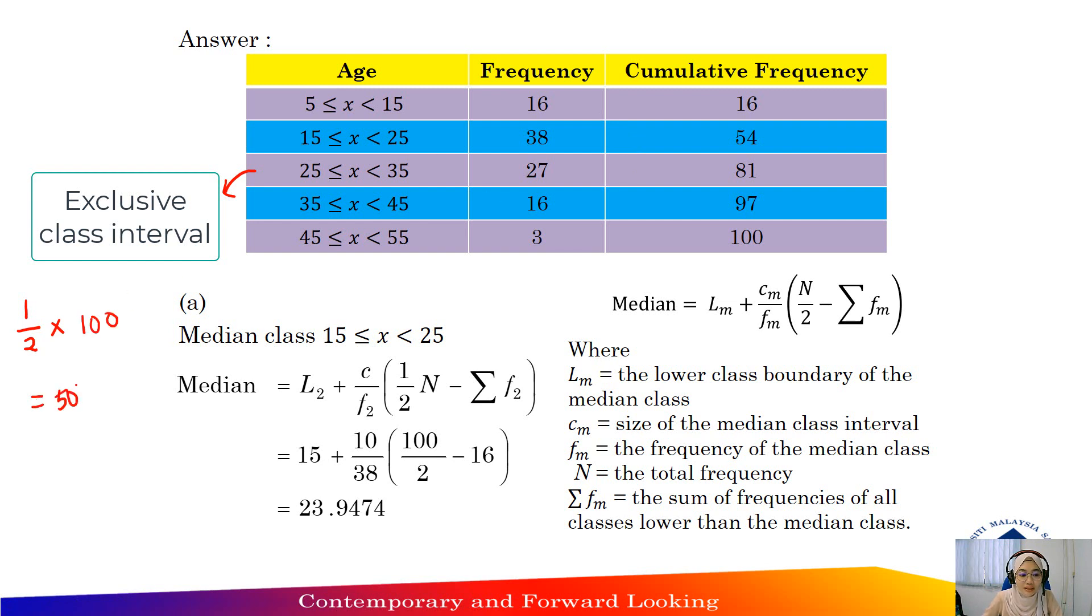So 50th observation is located here. The range will be x greater than or equal to 15 and less than 25. No need to find the lower and upper boundary because this one is exclusive class interval. So straight away, substitute into the formula to find median.